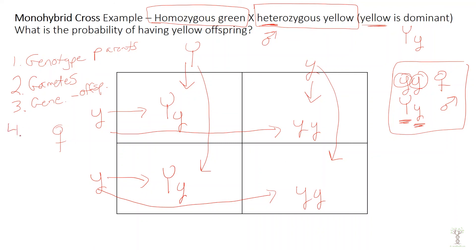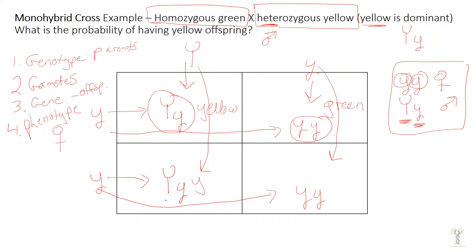The last step is to figure out the offspring's phenotype. If the offspring is a heterozygote, the phenotype is yellow. When you have both recessive alleles, you are green. So half are yellow and half are green. The probability of having yellow offspring in this example is 50%.